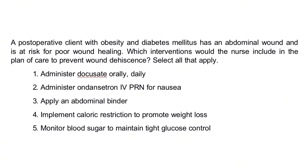A postoperative client with obesity and diabetes mellitus has an abdominal wound and is at risk for poor wound healing. Which interventions would the nurse include in the plan of care to prevent wound dehiscence? Select all that apply. 1. Administer docusate orally, daily. 2. Administer ondansetron for nausea. 3. Apply an abdominal binder. 4. Implement caloric restriction to promote weight loss. 5. Monitor blood sugar to maintain tight glucose control.